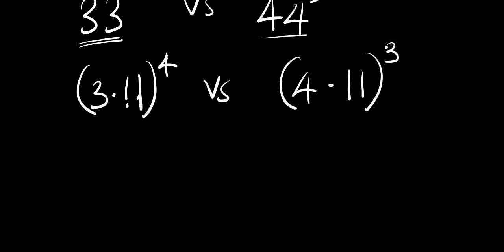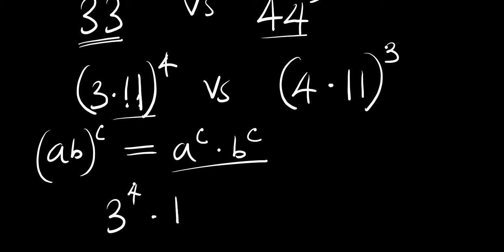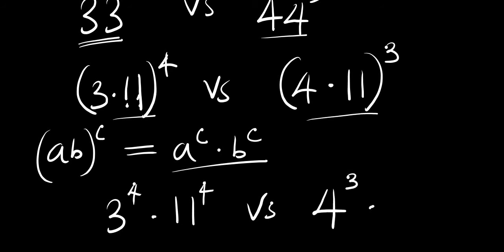Now, if you have (a times b) raised to the power of c, this equals a raised to the power of c times b raised to the power of c. We apply this identity here, giving us 3 raised to the power of 4 times 11 raised to the power of 4, versus 4 raised to the power of 3 times 11 raised to the power of 3.